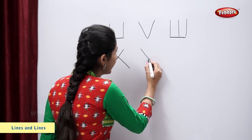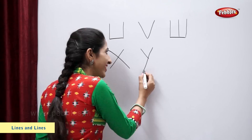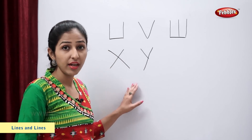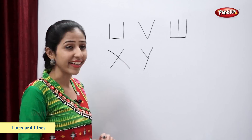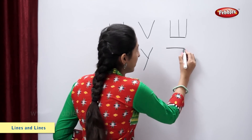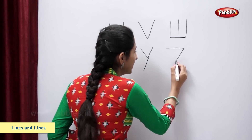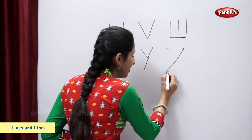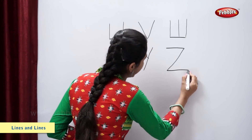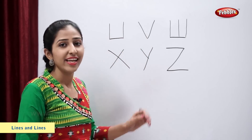Slanting line. Another slanting line — letter Y. Sleeping line. Slanting line. One more sleeping line — letter Z.